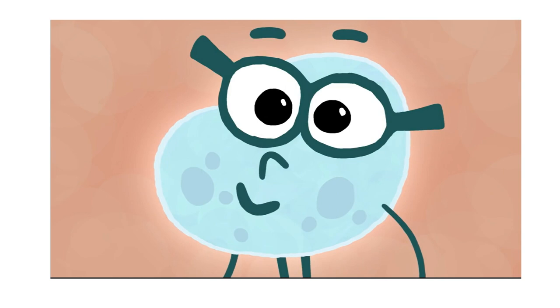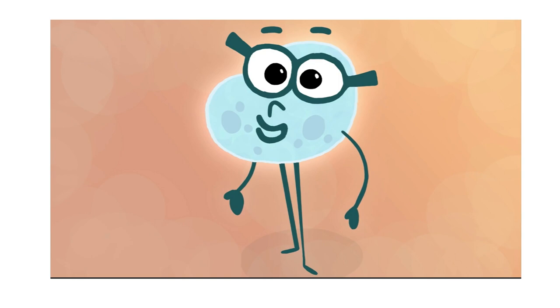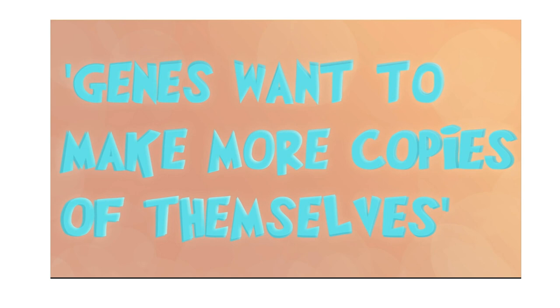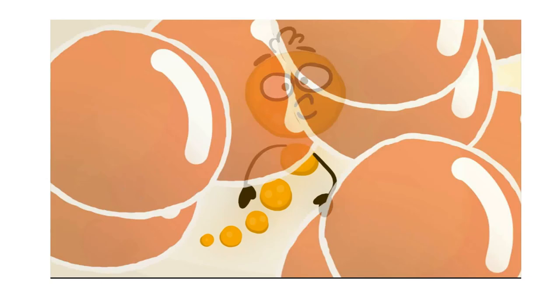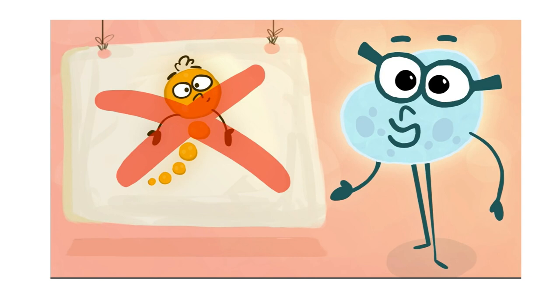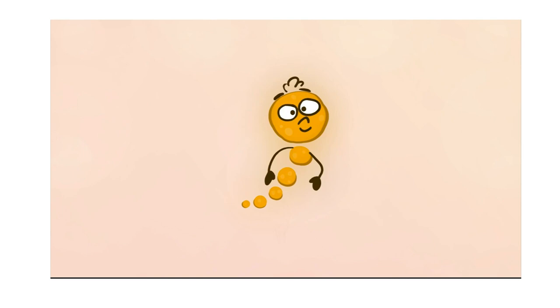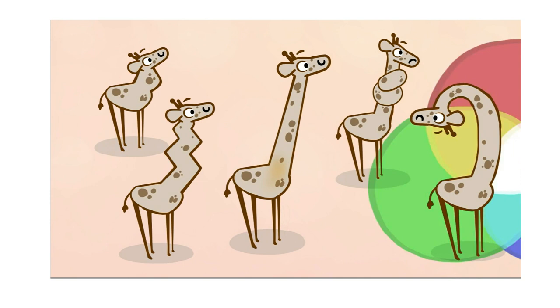Anything that lets more copies of the gene pass on to the next generation will serve its purpose — except evolutionary purpose. When we say things like 'genes want to make more copies of themselves' or even 'natural selection,' we're actually using metaphors. A gene doesn't want anything and there's no outside mechanism that selects which genes are best to preserve. All that happens is random genetic mutations cause organisms to behave or develop in different ways.